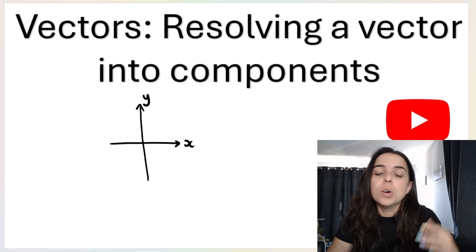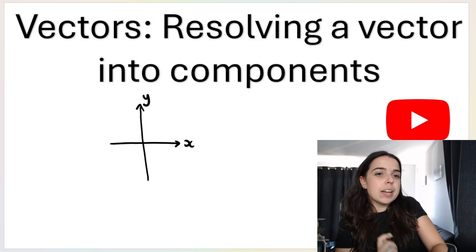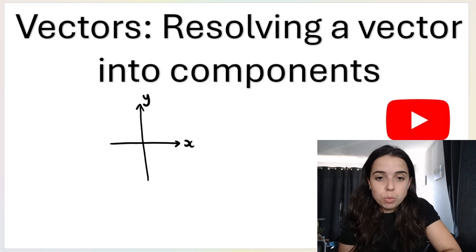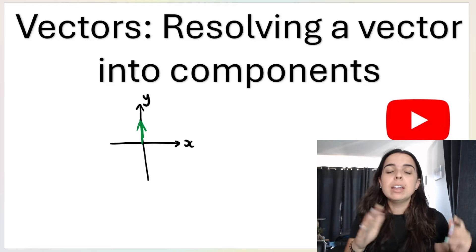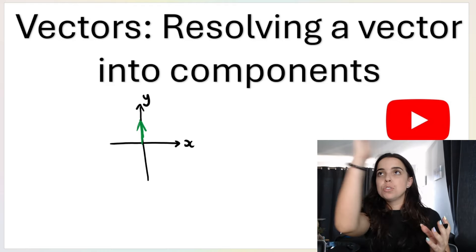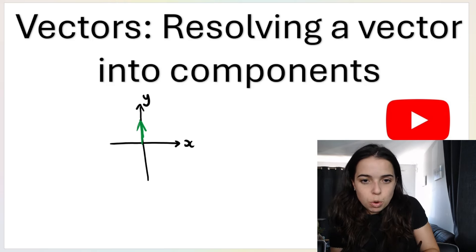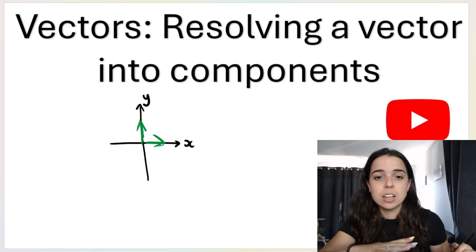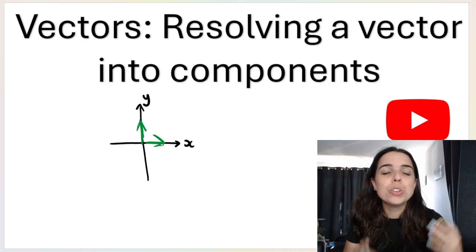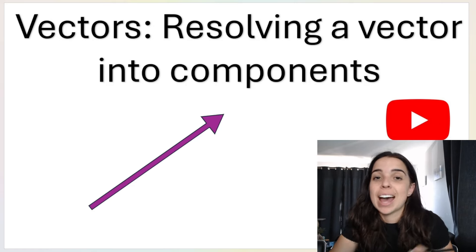What do I mean by 'acting at an angle'? On a Cartesian plane, you have the y-axis and the x-axis. If the vector acts straight up or straight down along the y-axis, it is not acting at an angle relative to the y-axis or x-axis, so we don't need to break it down into components. Similarly, if a vector is acting directly to the right, straight along the x-axis, it is not at an angle, so I do not need to break it down into components.